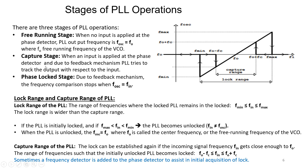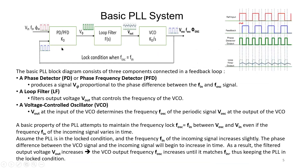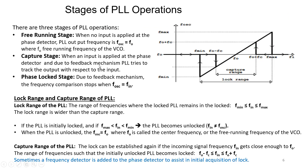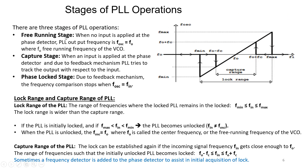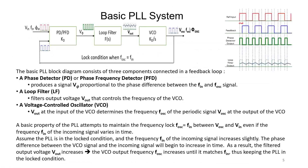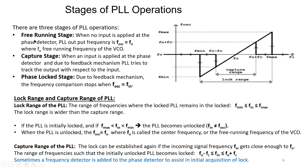The second stage is the capture stage: when an input is applied at the phase detector, the PLL starts capturing the incoming signal — like switching on your mobile again. Due to the feedback mechanism, the PLL tries to track the output with respect to the input. Frequency comparison stops when f_osc becomes equal to f_in, at which point the PLL is locked.